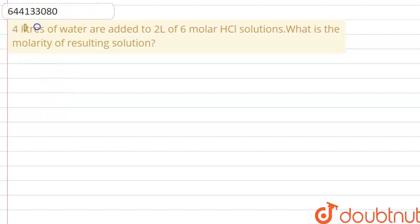Let me explain it to you. Four liters of water are added to two liters of six molar HCl solution. What is the molarity of resulting solution?